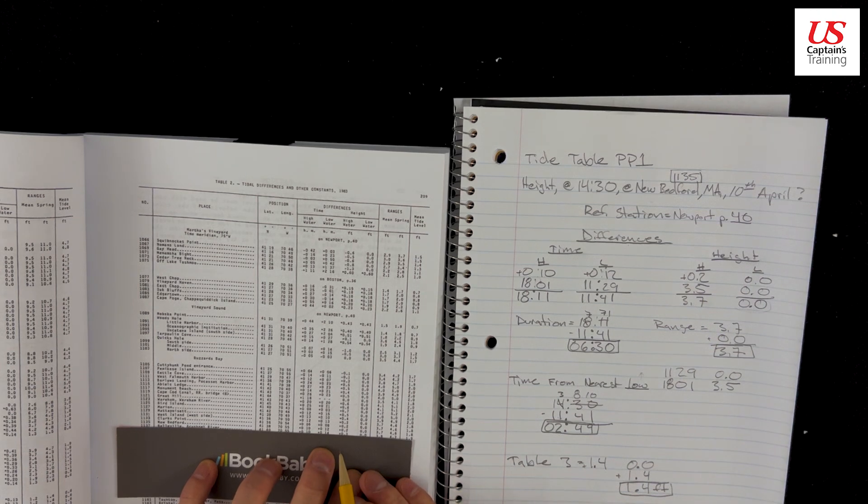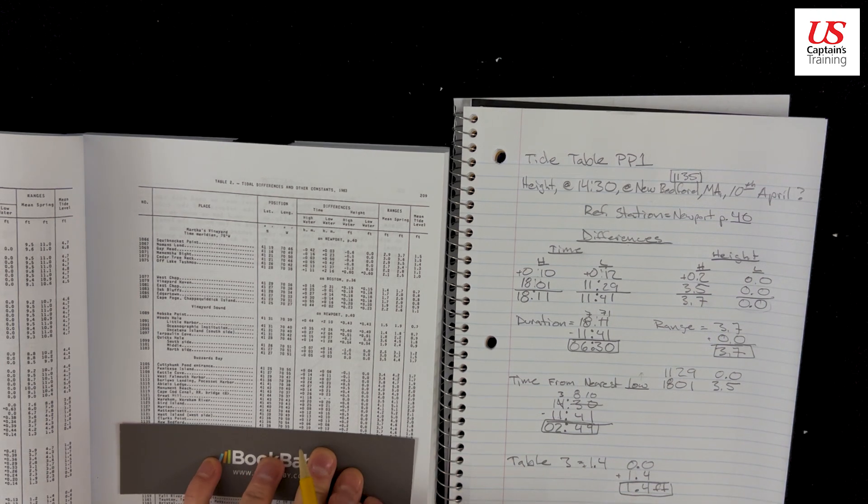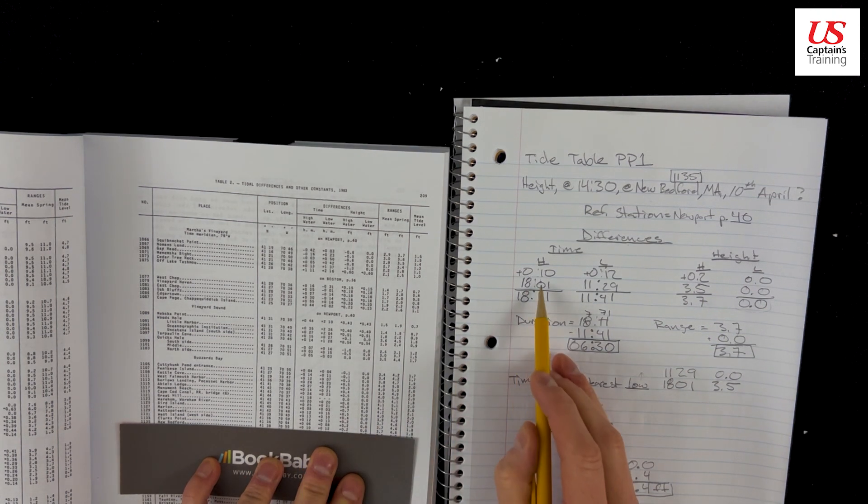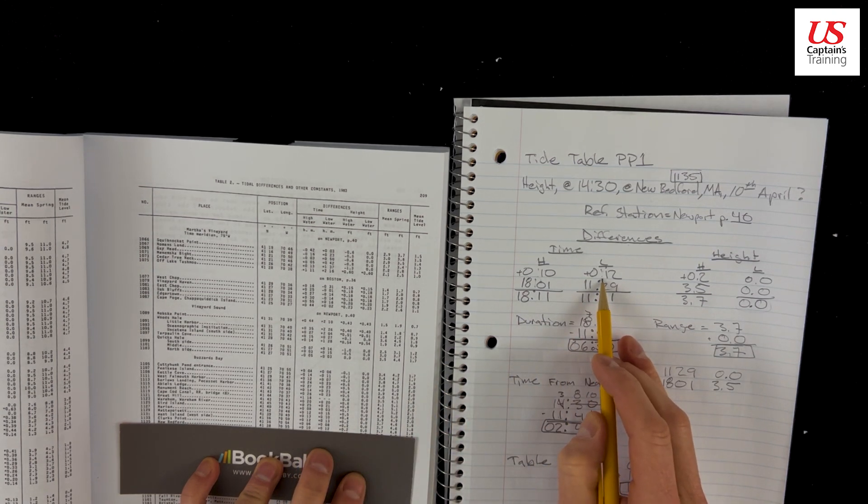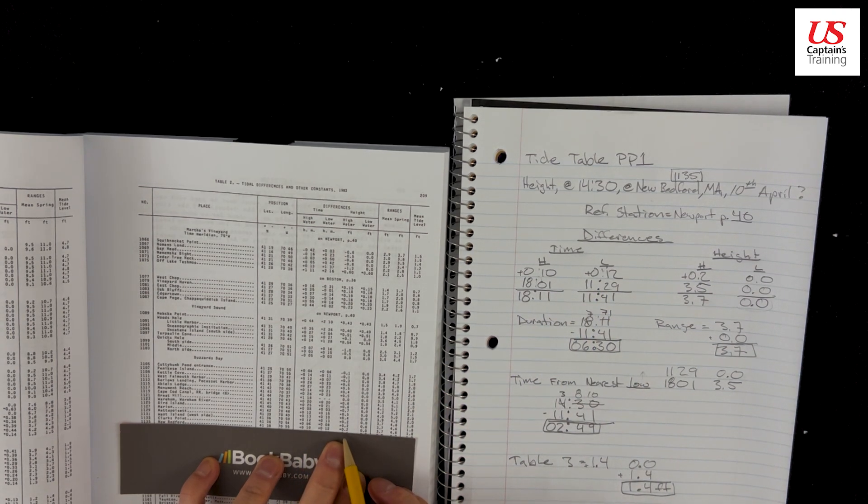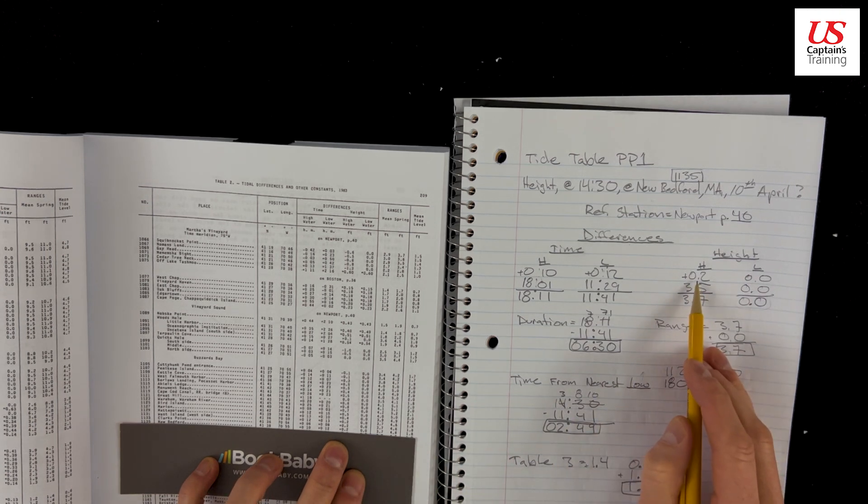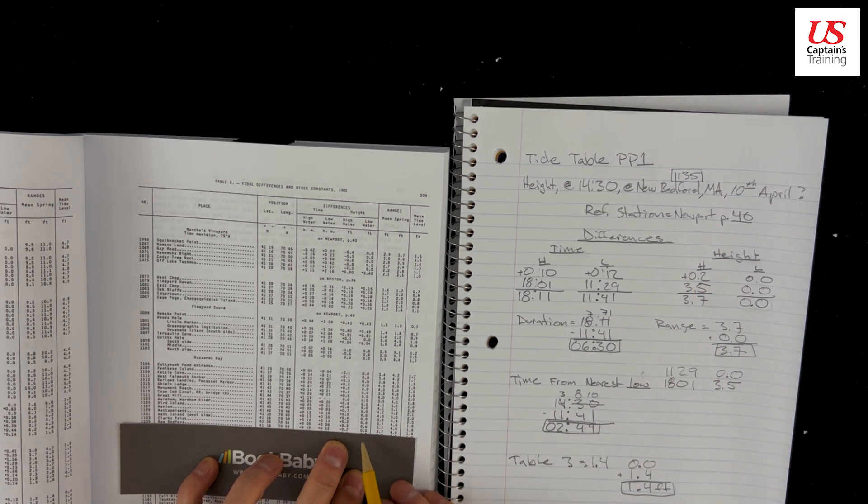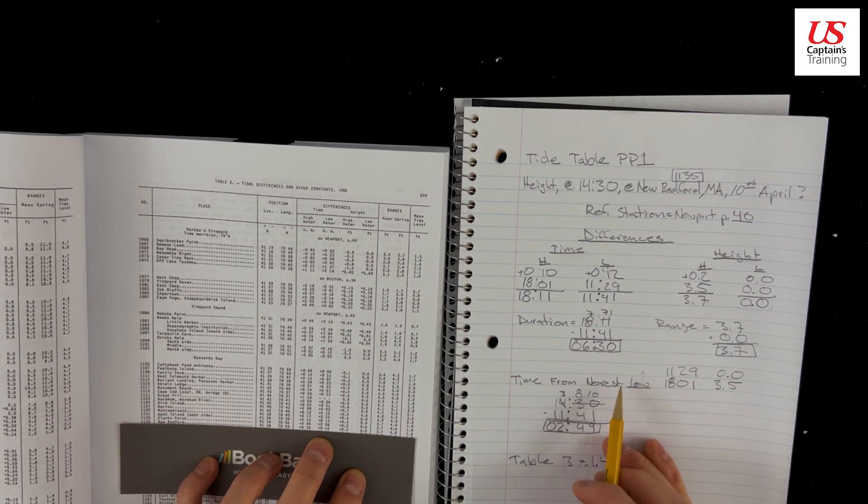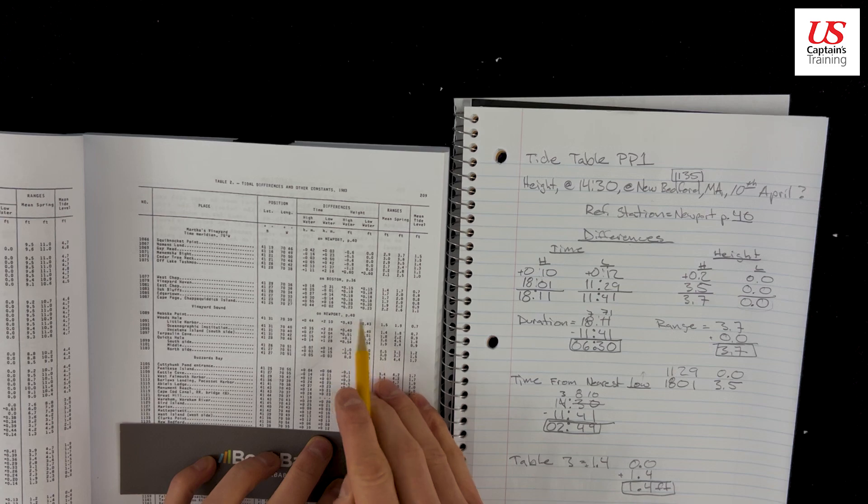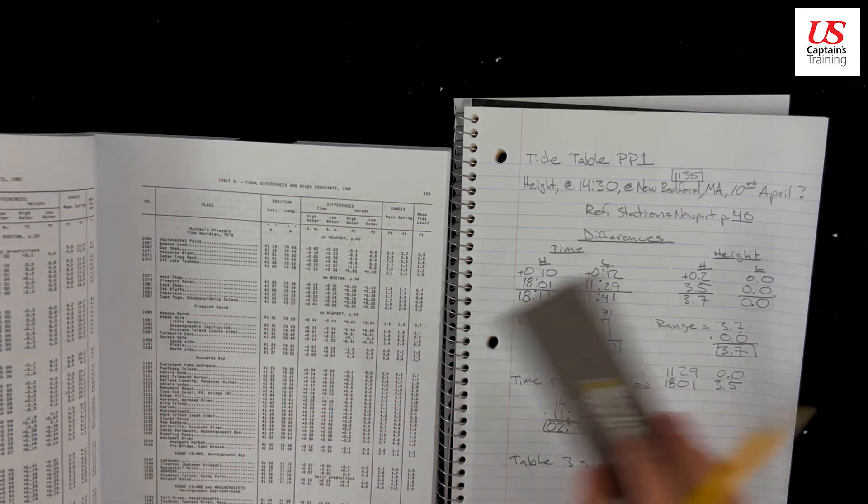New Bedford tour, plus 10 at the high, plus 10, plus 12 at the low, plus 12. And then here's the height high, plus 0.2, we record that here, 0.2, and 0.0, we record that here. And now we have that information recorded. We jump to Newport page 40 in our table ones.